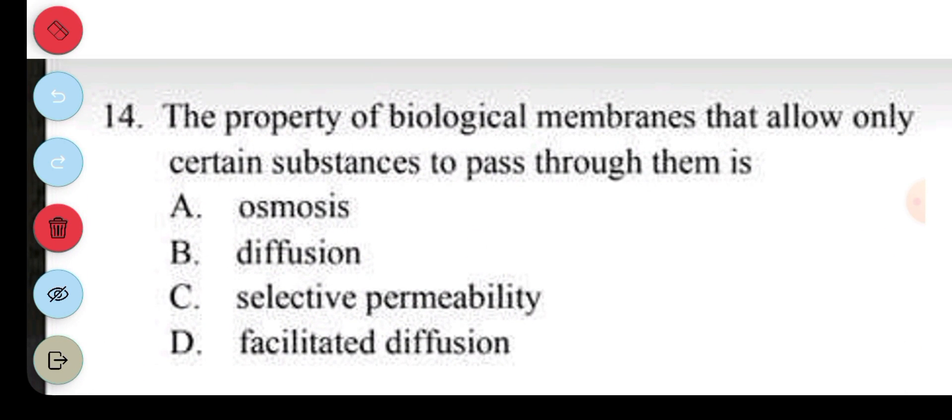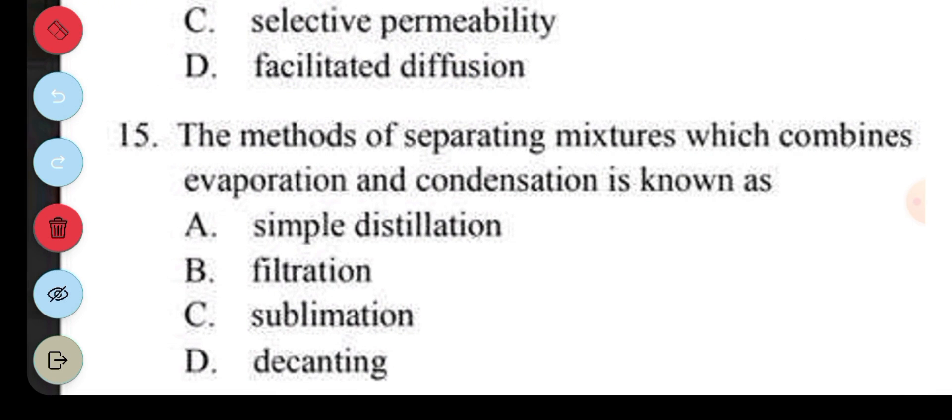Question 14. The property of biological membranes that allow only certain substances to pass through them is: A. Osmosis. B. Diffusion. C. Selective permeability. D. Facilitated diffusion. Question 14, C, selective permeability. Question 15. The method of separating mixtures which combines evaporation and condensation is known as: A. Simple distillation. B. Filtration. C. Sublimation. D. Decanting. The answer to question 15 is A, simple distillation.